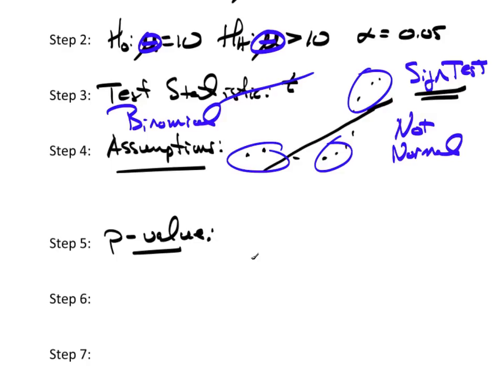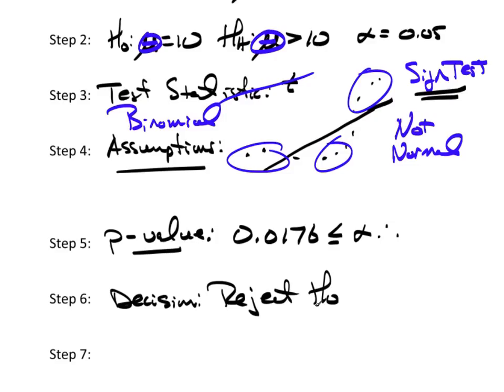Right now, I'm going to emphasize the p-value, 0.0176. That's less than or equal to alpha. Therefore, this next step here, my decision is to reject the null hypothesis.